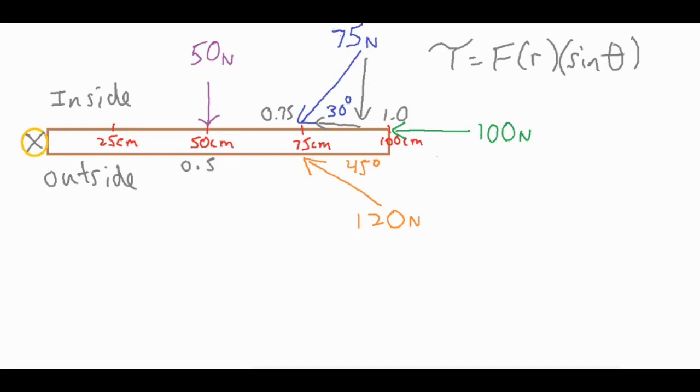Now all we have to do is combine all of the torques that are acting in the same direction and then subtract all the ones that are going in the opposite direction. Now I added this 100 newton torque over here just to make a point.